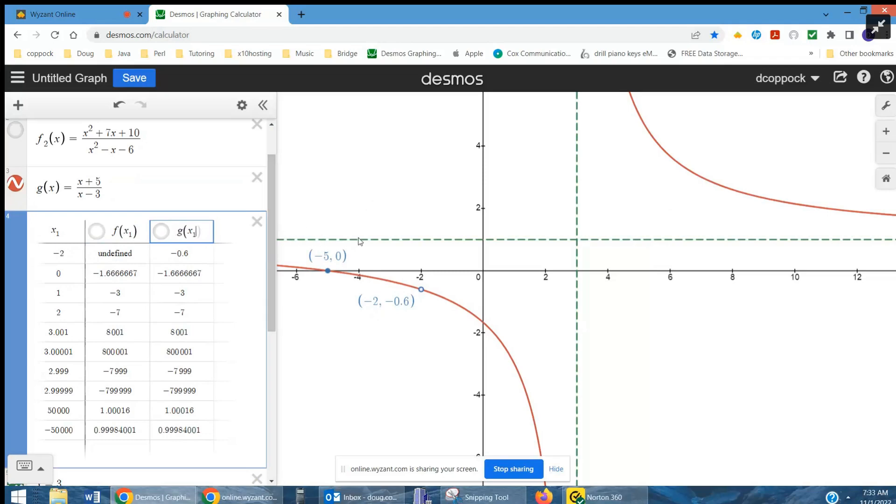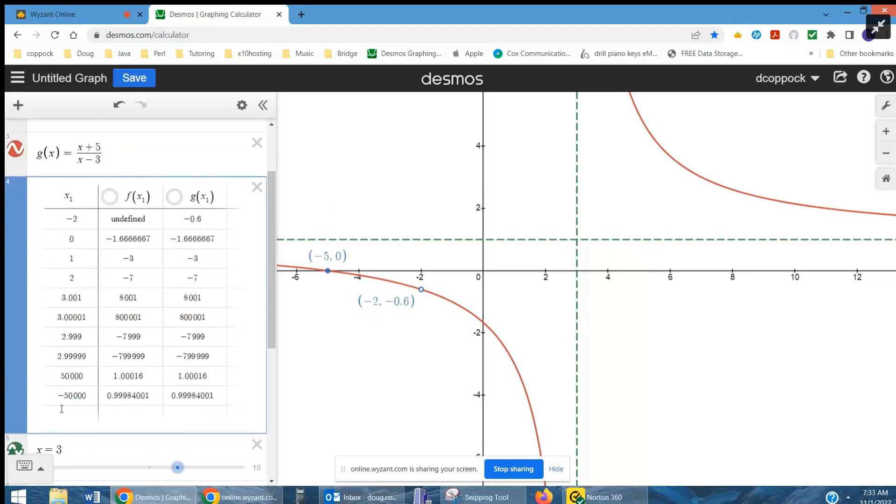There's the horizontal asymptote, y equals 1. Notice that in here, as we get really big values, 50,000 for x, the y value gets closer and closer to 1. That's what we mean by a horizontal asymptote. Or negative 50,000, 0.999. We added another 0, we get even closer to 1.